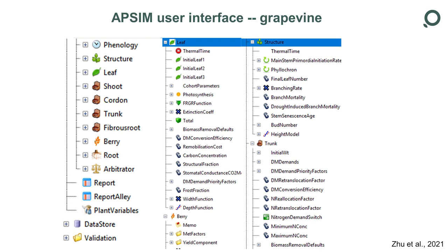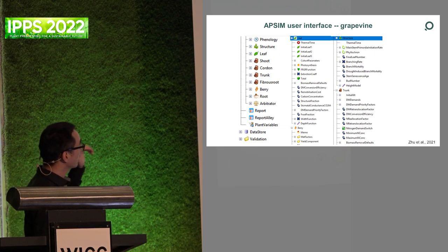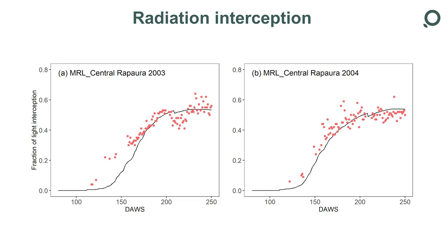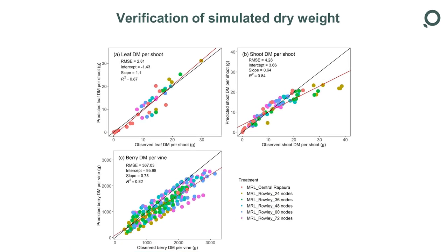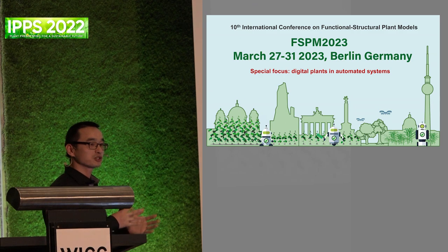Beside the functional structural model, we are also doing quite a lot of work on the APSIM model. APSIM is developed by CSIRO and Queensland University, but in Plant and Food Research New Zealand we also have a large group working on APSIM development. I developed a graphite model in the APSIM framework with a strip light interception model to capture light interception by strip rows with a hedgerow canopy, and incorporated a statistical bunch number and berry number prediction model. We can simulate the biomass of different components for different treatments very well. Finally, I want to advertise the Functional Structural Plant Model 2023 conference in Berlin next year — please join if you are interested.